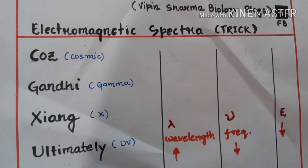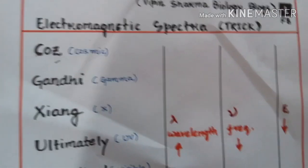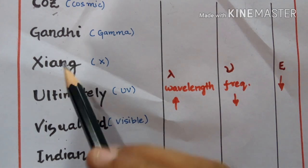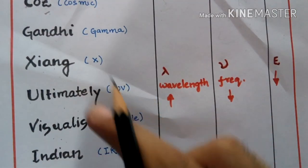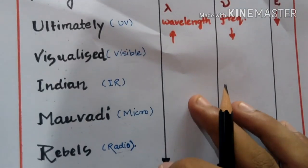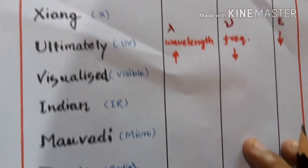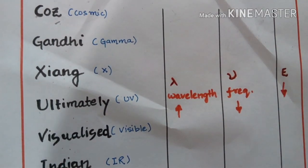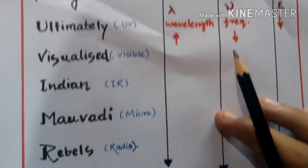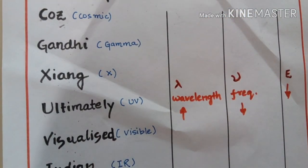The trick is the phrase: 'Cause Gandhi Jiang Ultimately Visualize Indian Mawadi Rebels.' Here, 'cause' is simply the abbreviation of 'because.' Gandhi and Jiang are two political leaders — Gandhi is an Indian leader and Jiang is a Chinese leader. Let's memorize the trick: Cause Gandhi Jiang Ultimately Visualize Indian Mawadi Rebels.